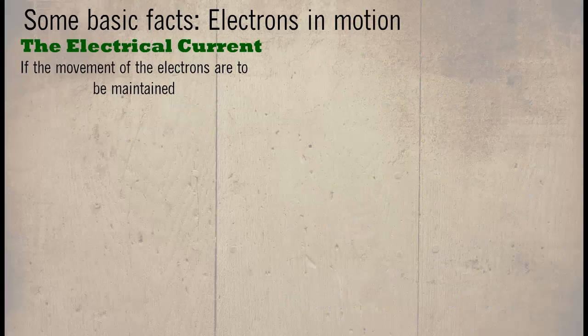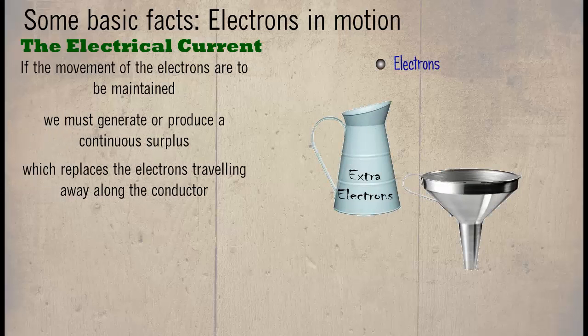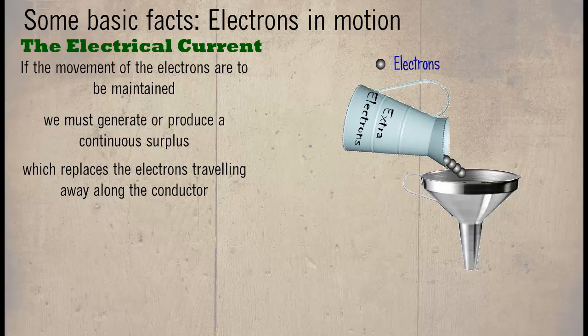If the movement of electrons is to be maintained, we must generate or produce a continuous surplus, which replaces the electrons traveling away from the conductor.